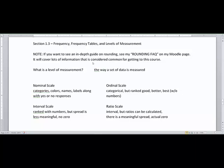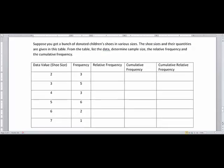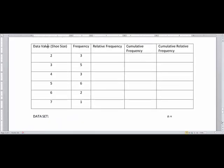So for this table, we're going to actually find frequency, relative frequency, cumulative frequency, and cumulative relative frequency. Now I would like you to have a basic calculator in front of you. This way you'll be able to do some of the simple computations that will get us some percentages and decimals. So suppose you've got a bunch of donated children's shoes in various sizes. The shoe sizes and their quantities are given in this table. From the table, list the data, determine sample size, the relative frequency, the cumulative frequency, and the cumulative relative frequency. So let's scroll down a little bit here and start off with kind of explaining what this means.